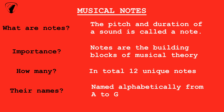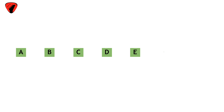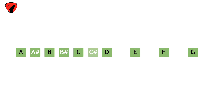These are named alphabetically from A to G. Each alphabet is succeeded by a variation of itself called a sharp note. For example, an A note is followed by an A sharp note, and so on.